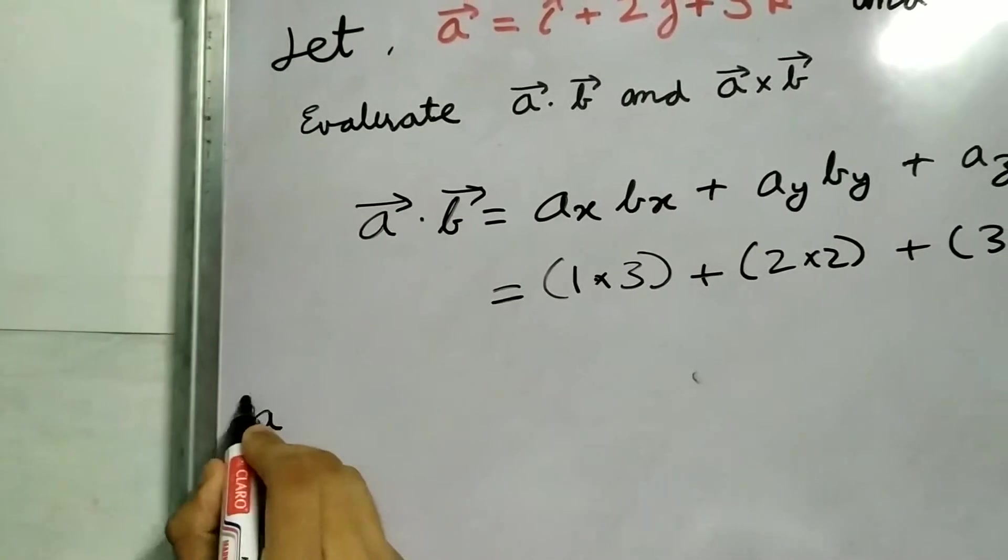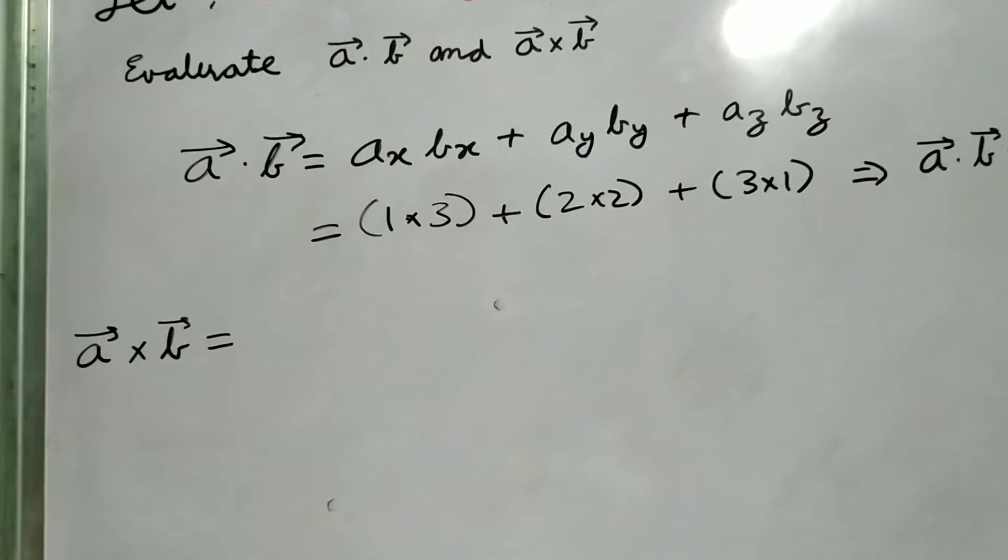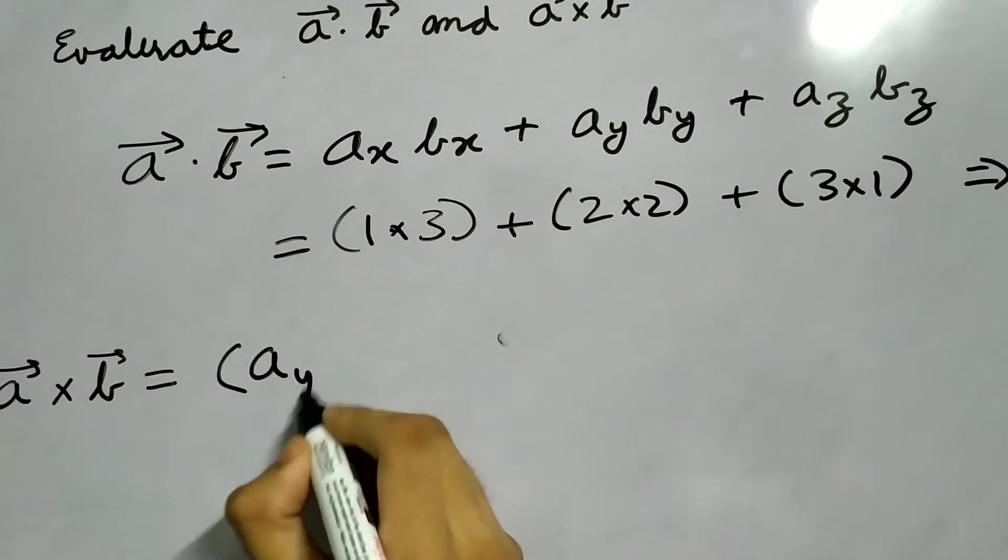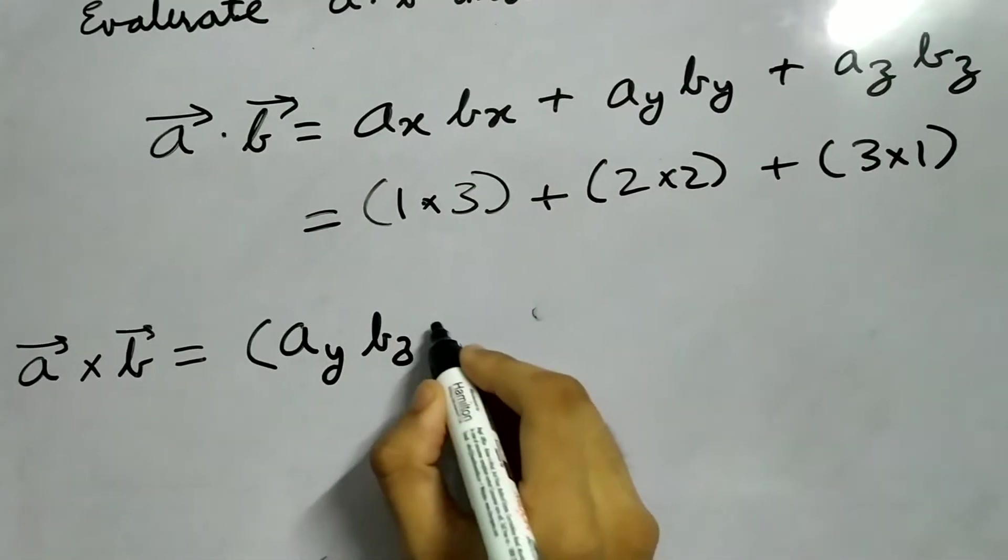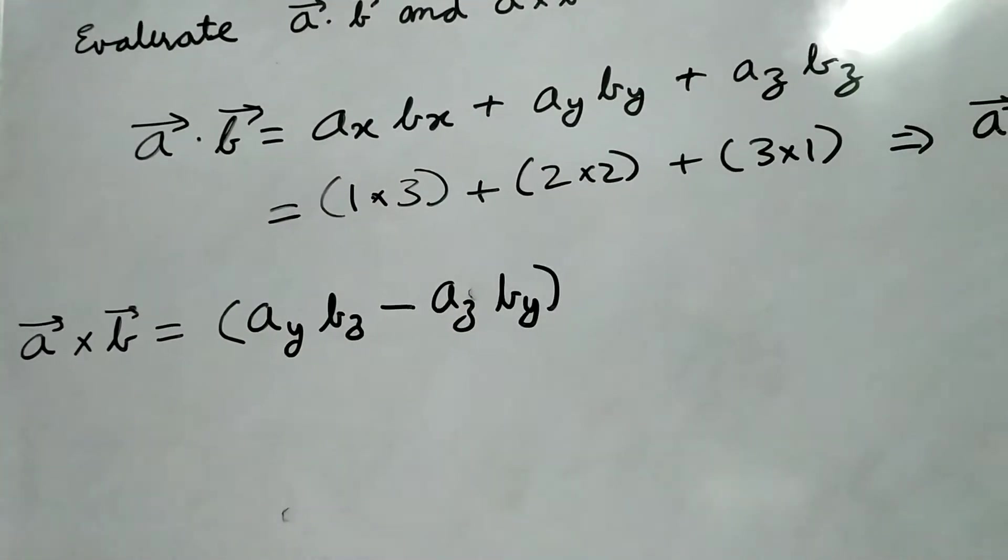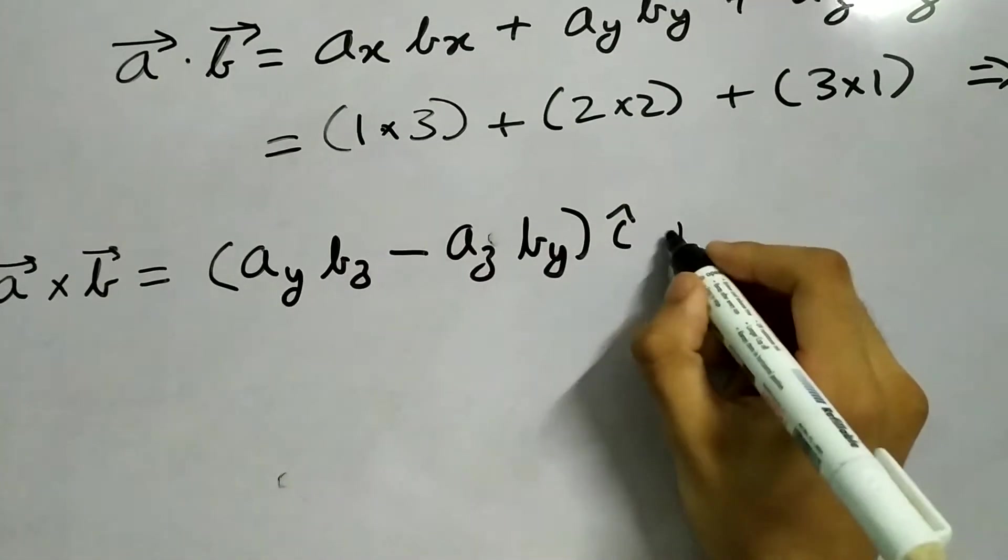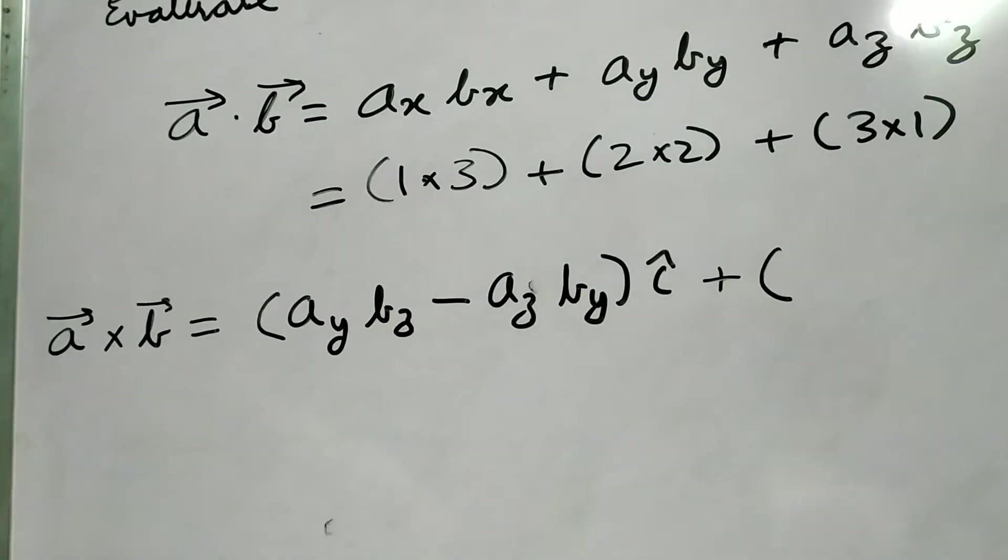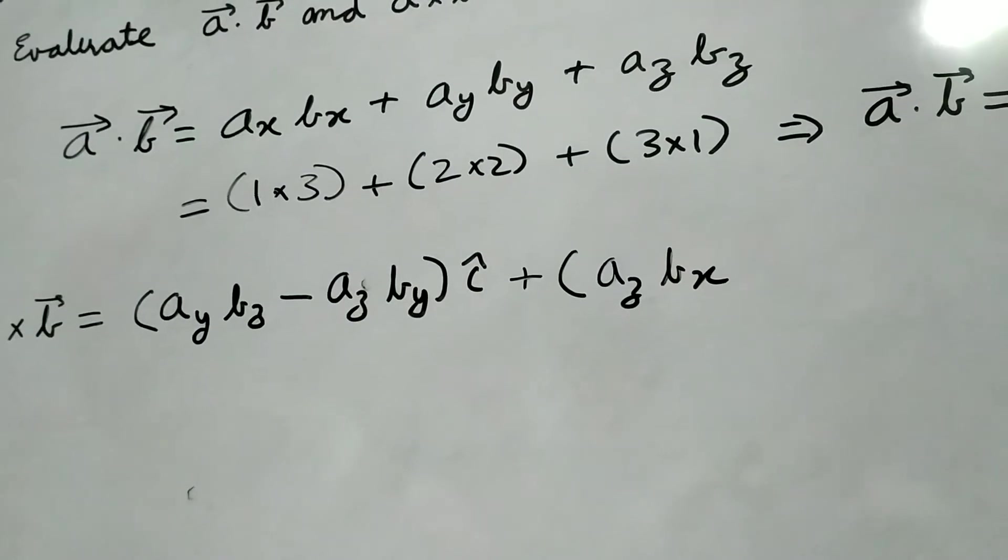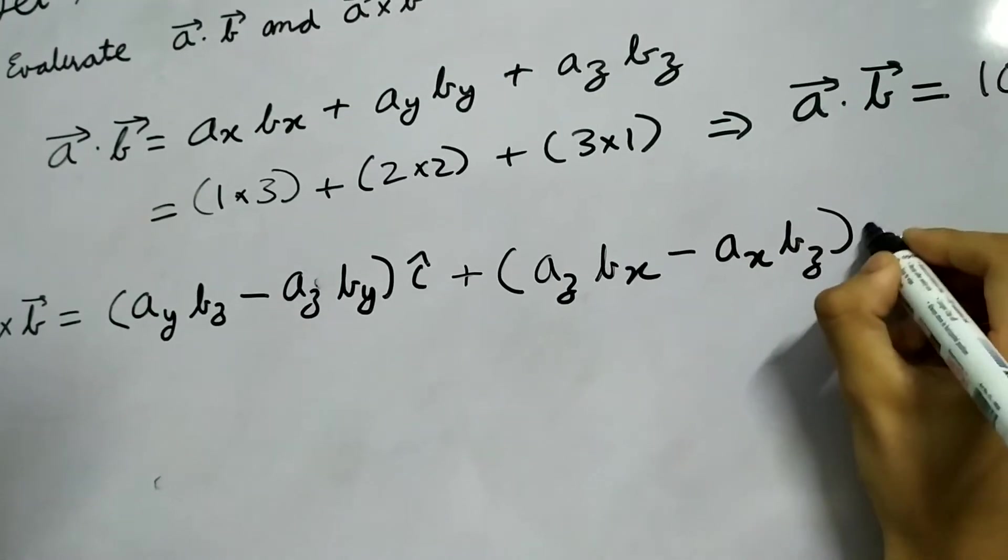Now for the cross product. Vector A cross vector B. It's not the same as B cross A. And it is A_y B_z minus A_z B_y, this is the i-th component. Plus A_z B_x minus A_x B_z, this is the J-th part.